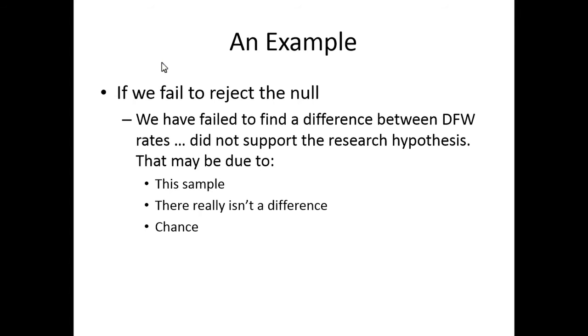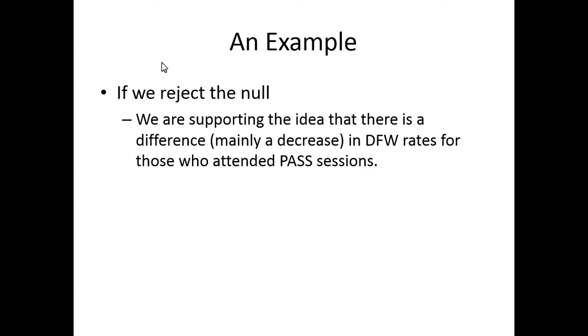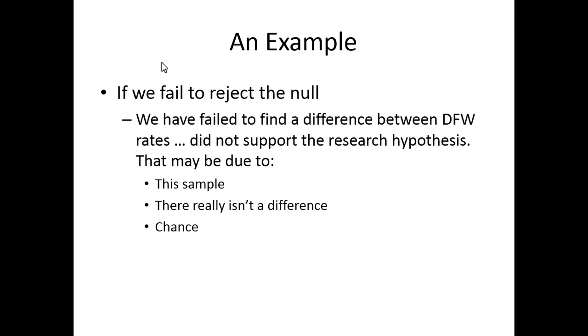If I reject the null, I'm supporting the research. If I fail to reject the null, I'm basically saying I don't know what happened. It could be this or this or this, but I don't know about this. One thing that people do that's incorrect is if they fail to reject the null, they say the null is true. That's not how this works. If you fail to reject the null, the null could be true, the research could be true, we're not sure. We don't have enough evidence to make a decision.